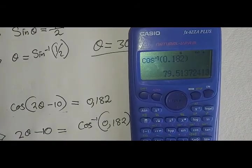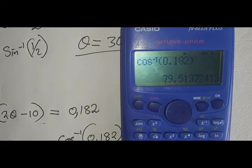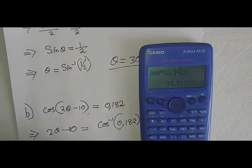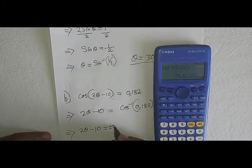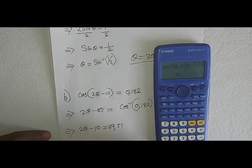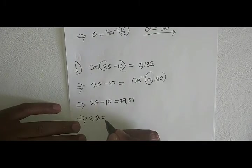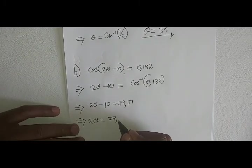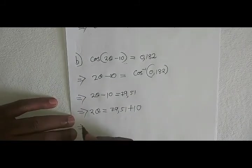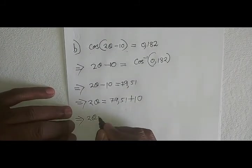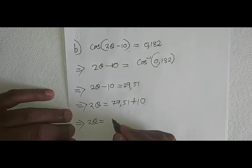That is 79.51. Therefore, which means 2θ is equal to 79.51 plus 10 degrees, which is to say 2θ equals 89.51.